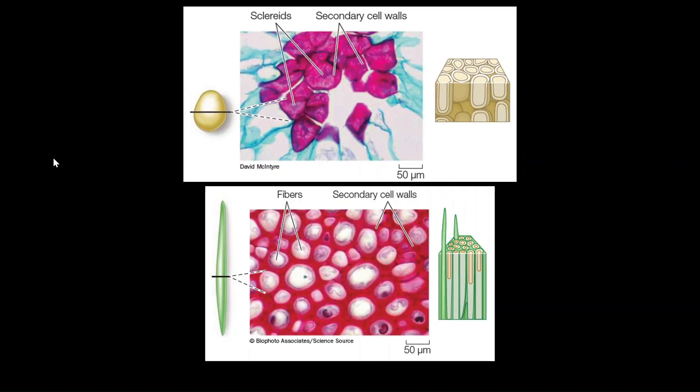Finally, we arrive at the third cell type, which is sclerenchyma cells. These cells provide mechanical support to the matured plant organs. They sound similar to collenchyma cells, right? But these cells are dead cells. How did they end up dying?